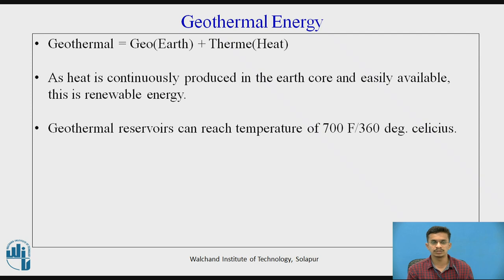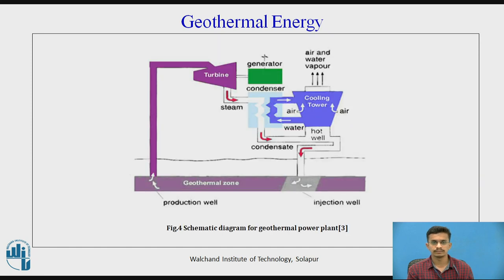With the help of geothermal energy, we can run turbines to produce electricity. The figure shows the typical layout of a geothermal power plant. Like all other conventional thermal power plants, the geothermal power plant uses the heat source to expand liquid to vapor or steam. This high-pressure vapor or steam is used mechanically to turn the turbine generator.